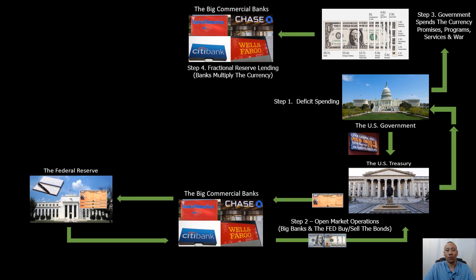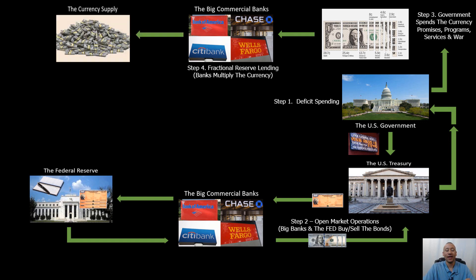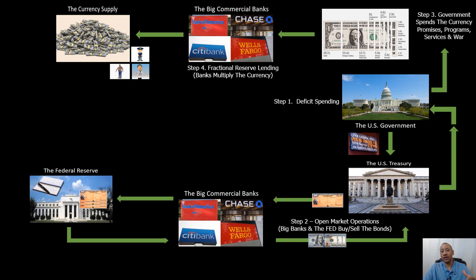From there we move into step four, where the banks are able to multiply the currency supply by using fractional reserve lending. And that's what makes up our total currency supply. The currency supply is what we work for — our blood, sweat, and tears, our time, energy, and effort goes into working for a piece of this currency supply.